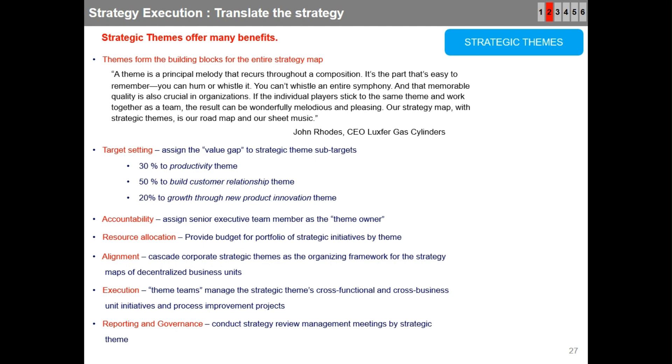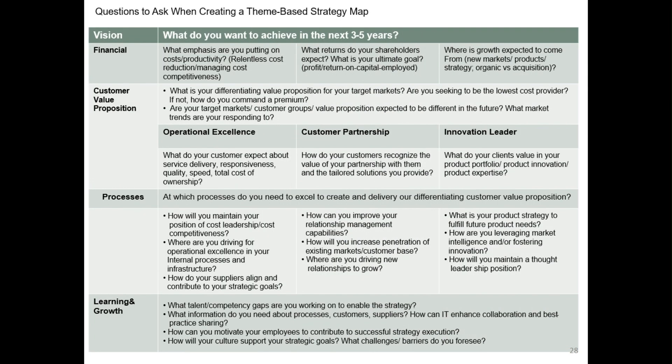Let us look at the questions to ask when creating a theme-based strategy map. For the financial perspective, you might ask: what emphasis are you putting on cost and productivity? What returns do your shareholders expect? Where is growth expected to come from? Similarly, continue asking questions for all perspectives.